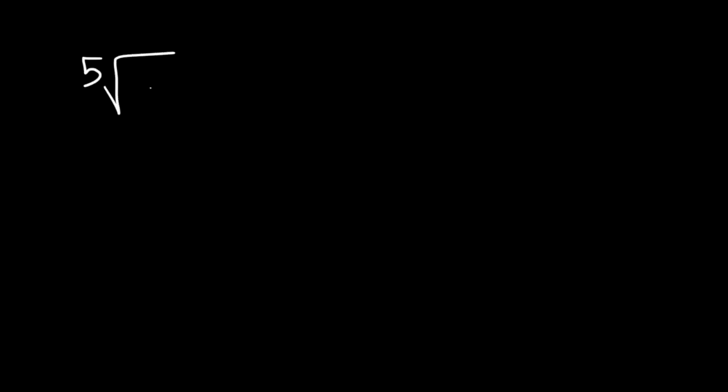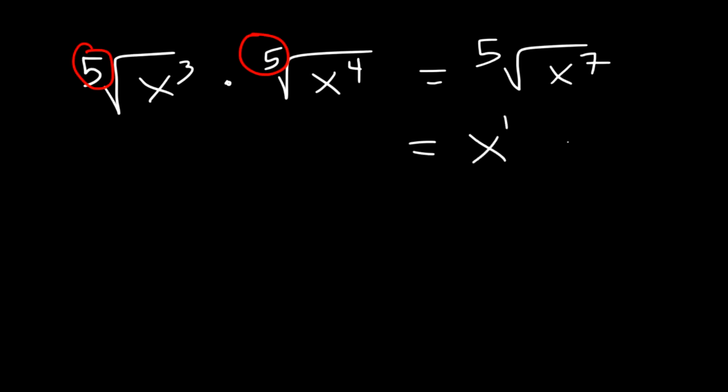What is the 5th root of x cubed multiplied by the 5th root of x to the 4th? If the index number is the same, you can simply multiply the stuff inside. x cubed times x to the 4th is x to the 7th. And then 5 goes into 7 one time with 2 remaining. And so that's going to be the answer.